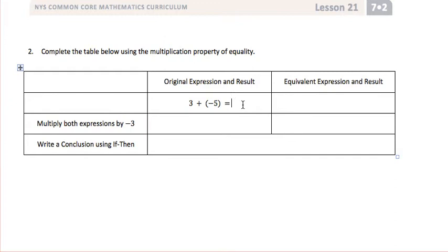Starting with the original expression 3 plus negative 5, whose sum is negative 2. An equivalent expression could be negative 4 plus 2, which is also negative 2.